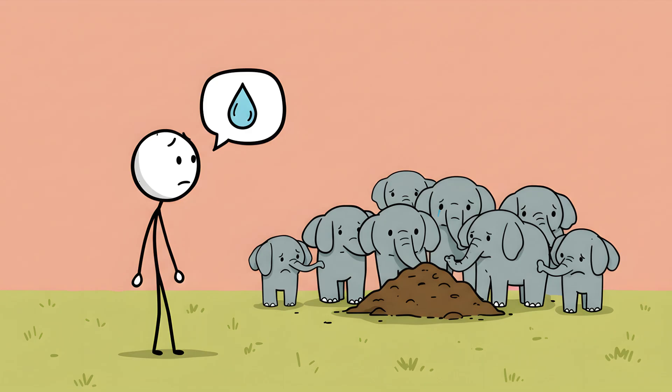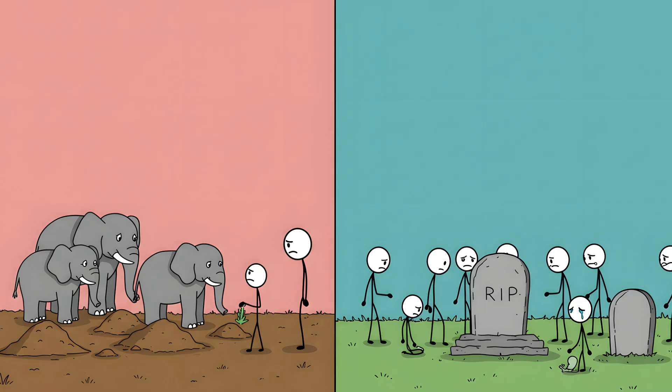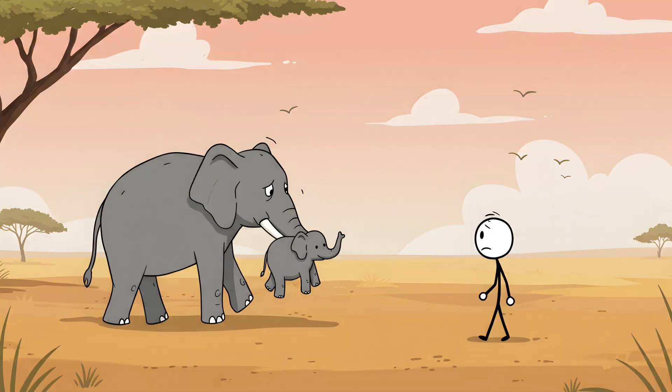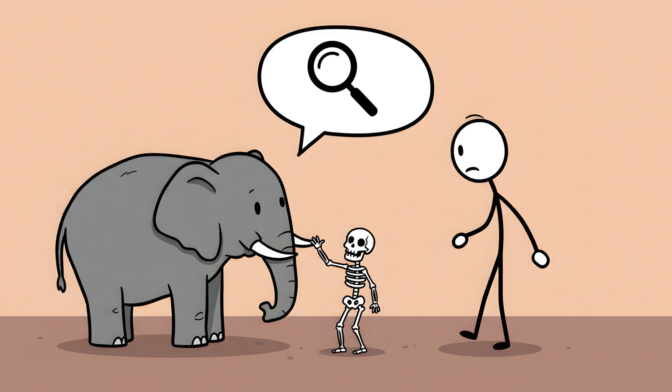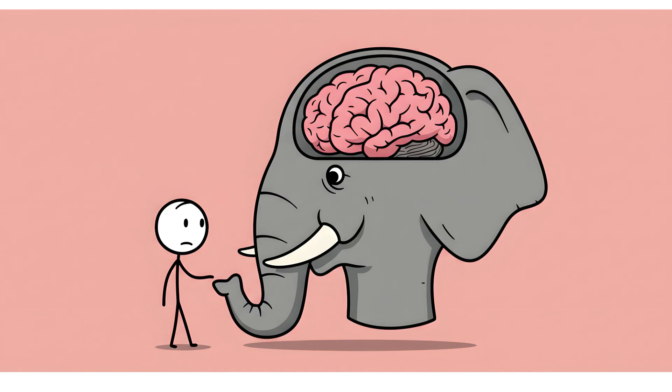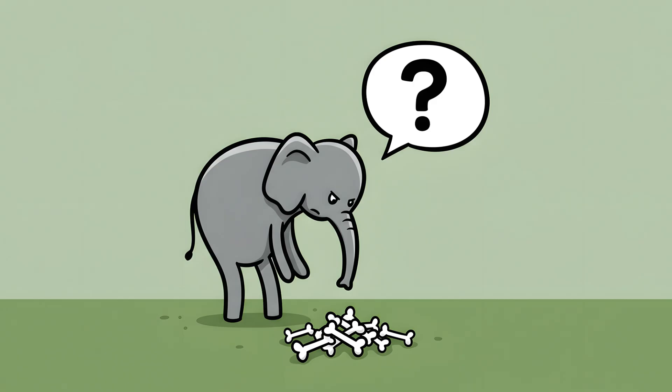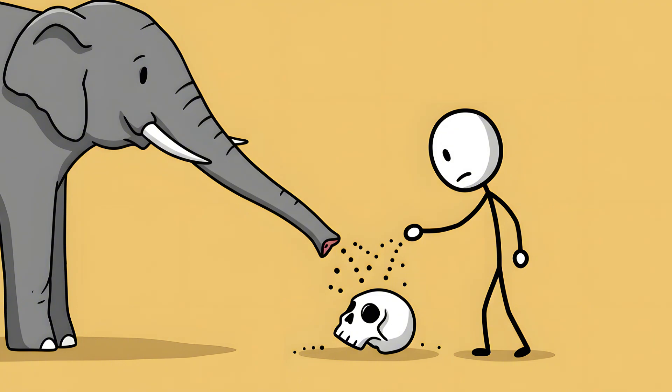Are they grieving? Is this a funeral? It's tempting to say yes. It looks so much like our own human rituals of mourning and remembrance. We see the same behaviors when a mother elephant loses a calf. She may carry the tiny body for days, refusing to let it go. But scientists are cautious. To claim an animal is grieving is to attribute a complex human emotion to it, something that's almost impossible to prove. The skeptical view is that this isn't about grief, but about information. Elephants have a massive brain and incredible memory. They might be intensely curious about death, trying to understand what happened to one of their own. They might be reading the bones with their trunks to learn the identity of the deceased or how they died.